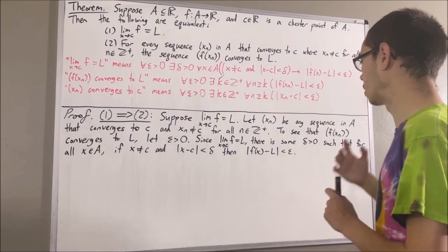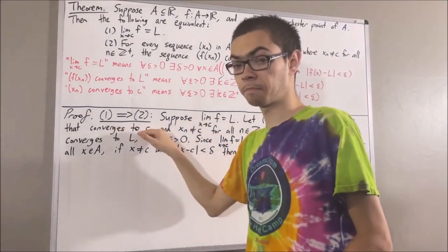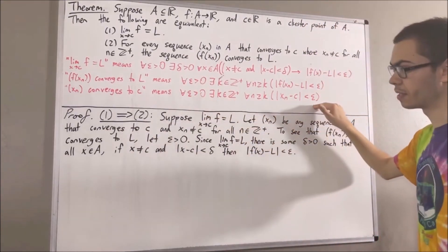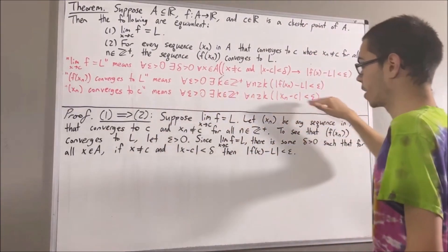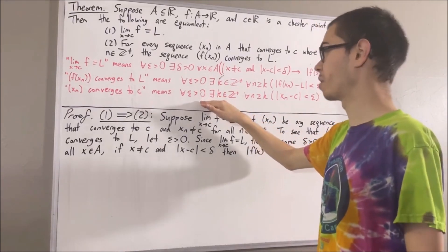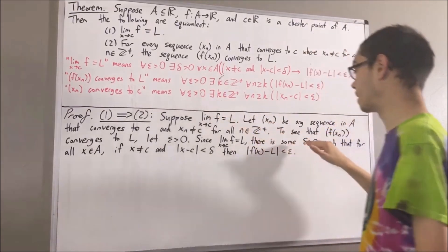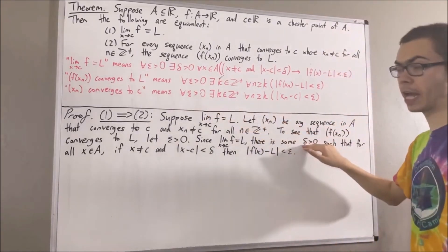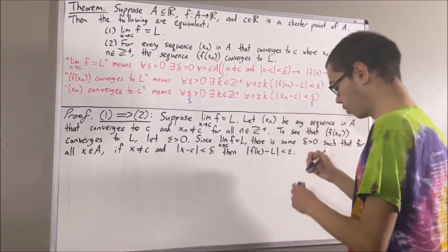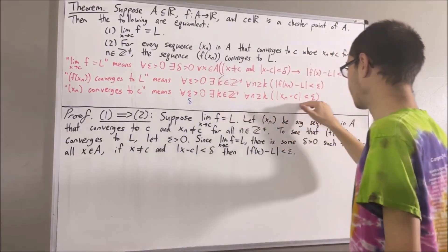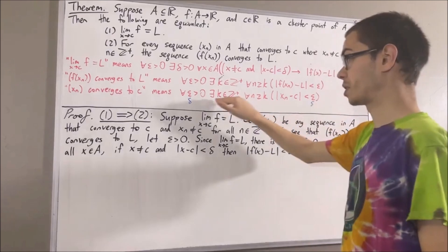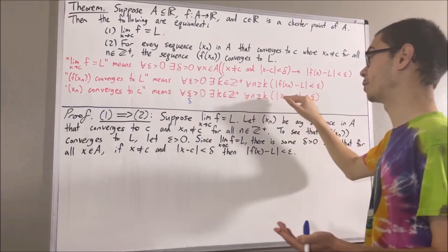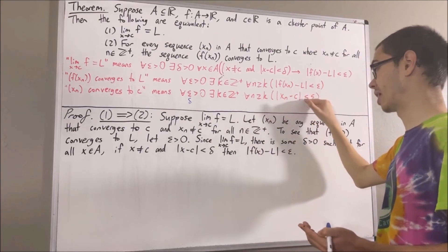Let's use the fact that Xn converges to C, which means this statement is true for every positive real number. In particular, it must work for the positive real number delta that we have. Taking epsilon to be the delta we have here, we get that there is some positive integer K such that for all positive integers N greater than or equal to K, the absolute value of Xn minus C is less than delta.